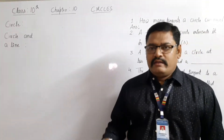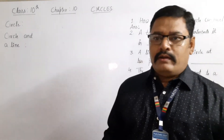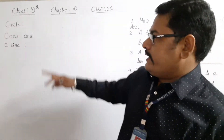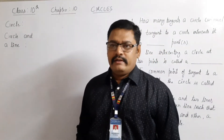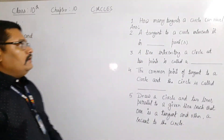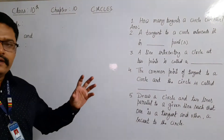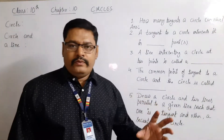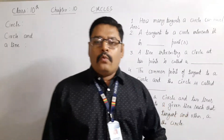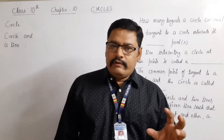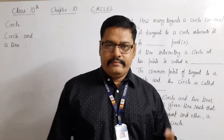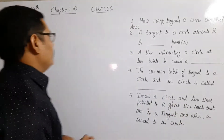In class 9th, we have studied what circles are. Can you tell what is a circle? A circle is a collection of all points which are equidistant from a fixed point.